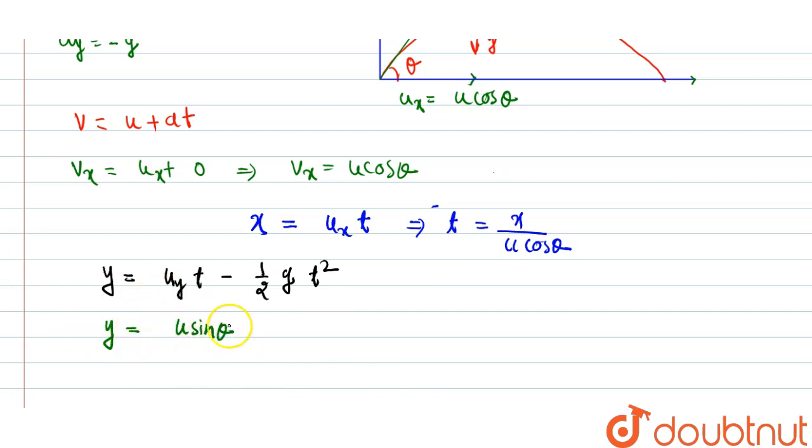The time t we have already found, that is x by u cos theta, minus half into acceleration due to gravity. And t square is x square by u square cos square theta.